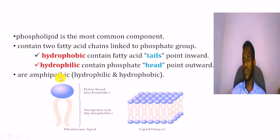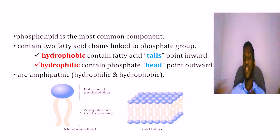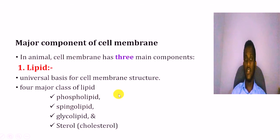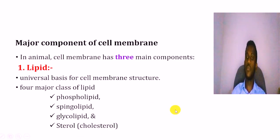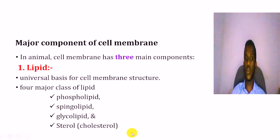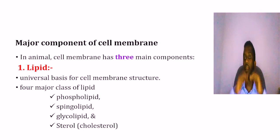The cell membrane is amphipathic, which is a very important component — it has both a hydrophilic part and a hydrophobic part. When using a sphingolipid, it is a major component found especially in the nervous system. The glycolipid is a carbohydrate-linked lipid. The other component is cholesterol, which is almost always present in the cell membrane structure and affects its fluidity.